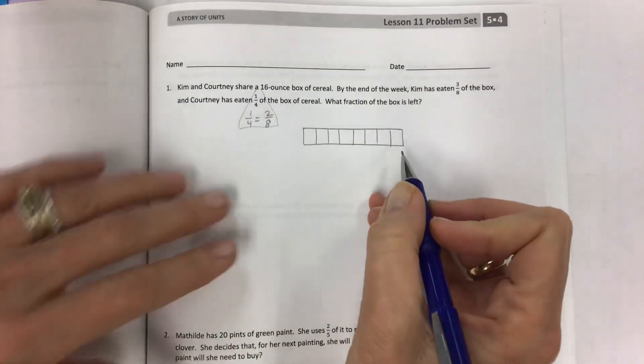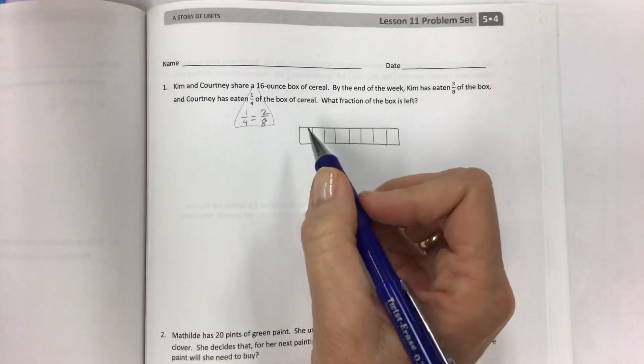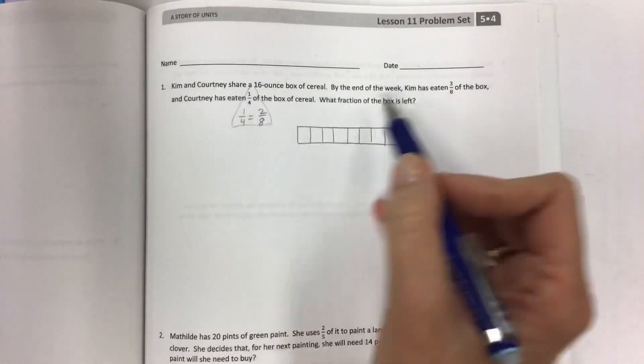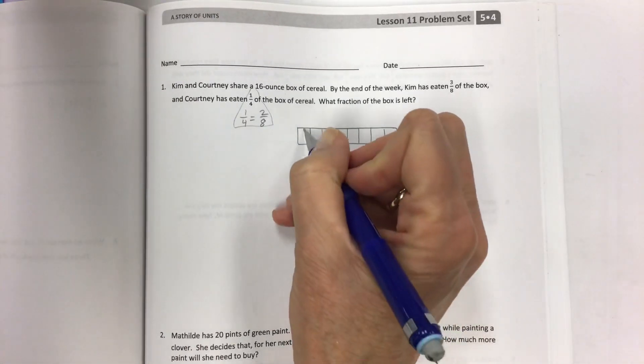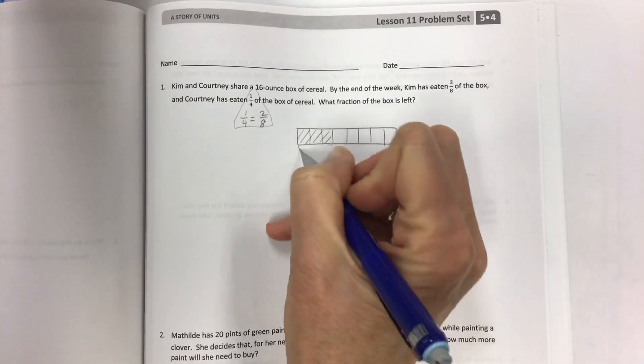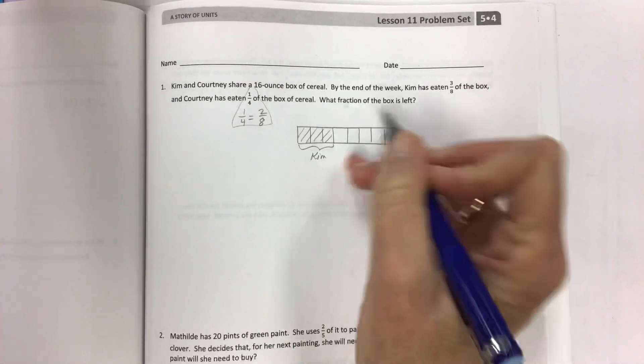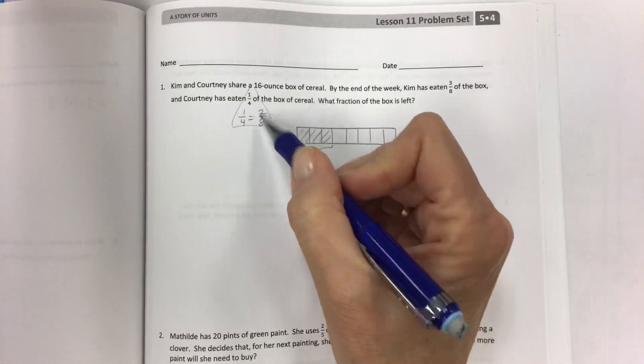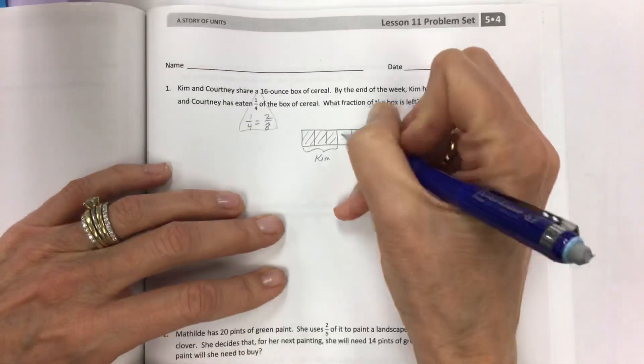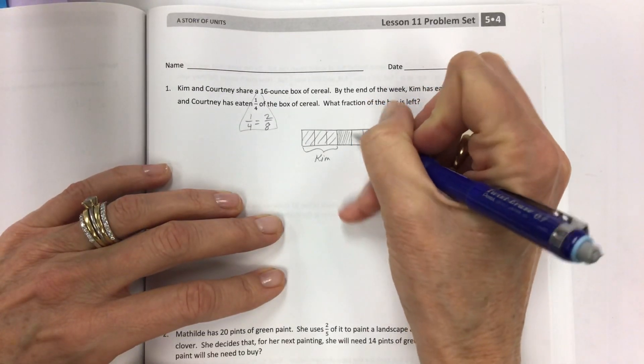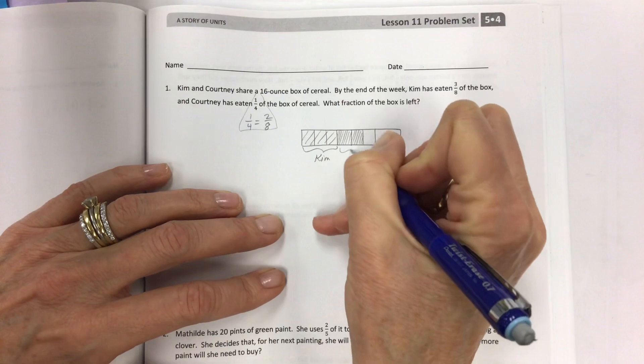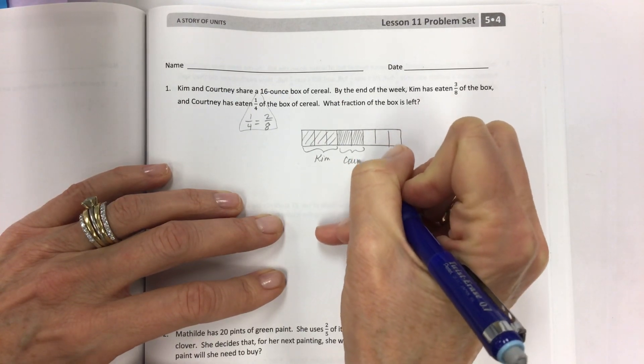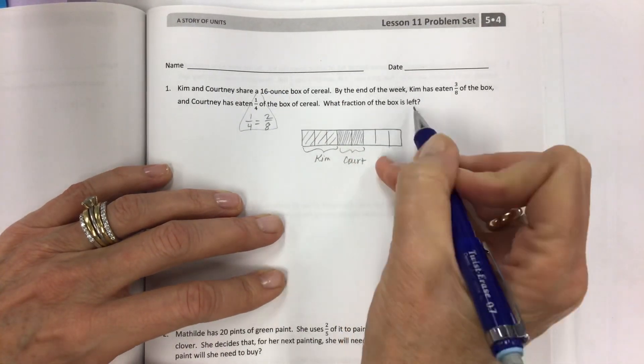By the end of the week, Kim has eaten three-eighths of the box, and Courtney has eaten one-fourth of the box of cereal. I just never want to have fractions that are not with the same common denominators, so as soon as I see that, I will make an equivalent fraction. Now let's make a lovely tape diagram. How many pieces? Eight.